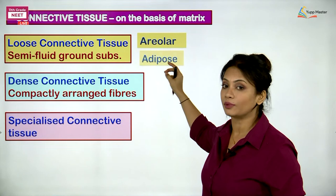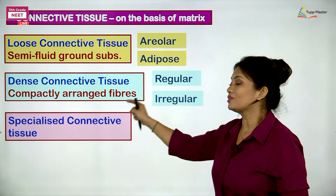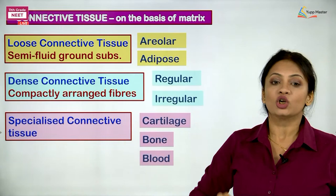Then there is dense connective tissue where everything is compactly placed. And then with the special types of connective tissue fluids, we had specialized connective tissue. For classification, we also divided loose into areolar and adipose. Then dense was divided into dense regular and dense irregular, which we just started in the last lecture.